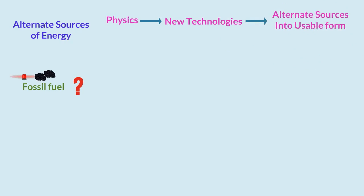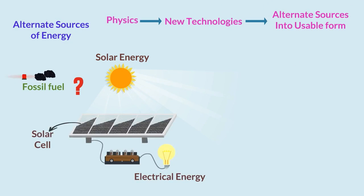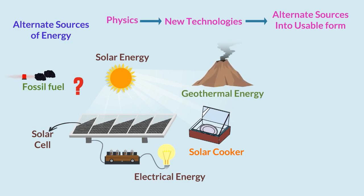For example, solar energy can be converted to electrical energy with the help of solar cells. Similarly, solar cooker can be used to cook food. Geothermal energy can be used for electricity generation.